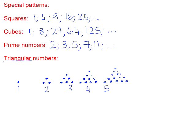If we count the number of dots in each stage: the first stage has 1, the second has 3, the third has 6, the fourth has 10, the fifth has 15. To get from one term to the next, we add the next position number: 1+2=3, 3+3=6, 6+4=10, 10+5=15. So you simply add the next position number to the previous term value to get the next term of the sequence.